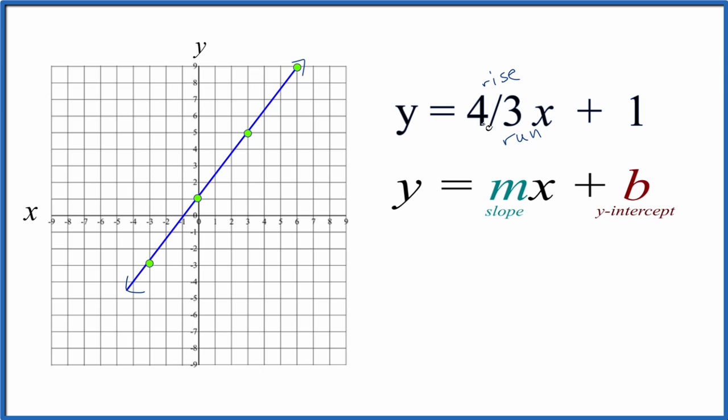And that's the graph for y equals four-thirds x plus one. Again, a table of values would work. It would give you the same line here. Slope-intercept form, just a little bit easier, especially when you have a fraction in your equation.